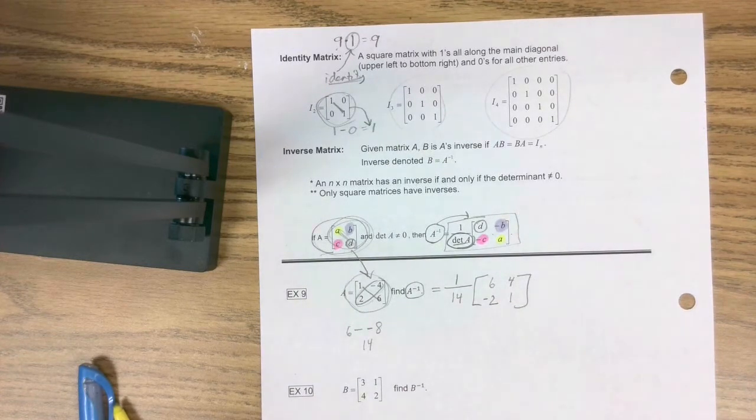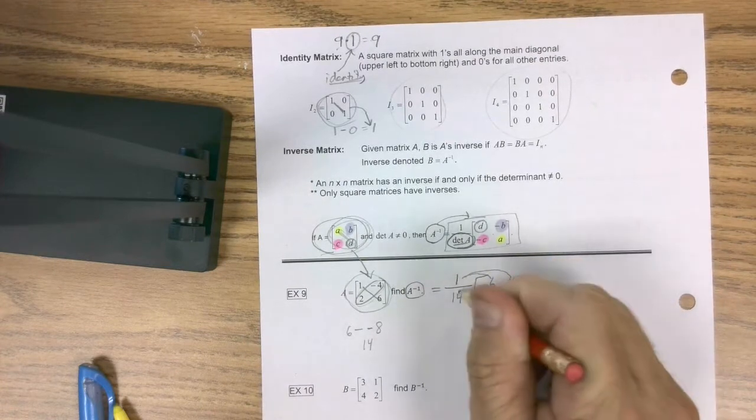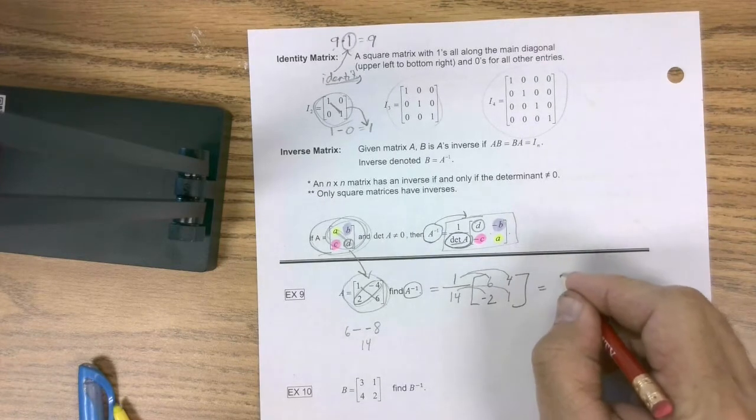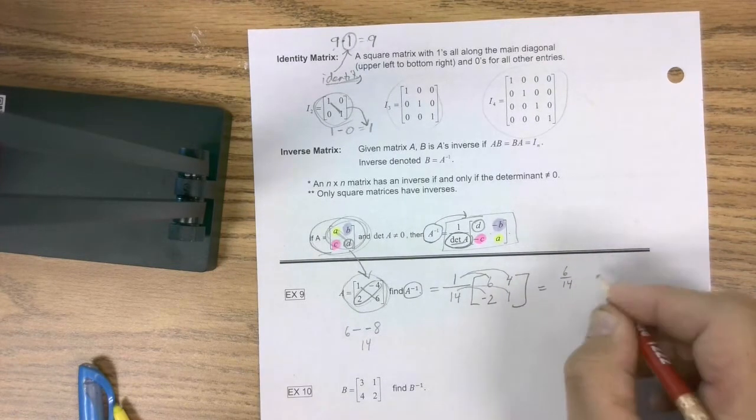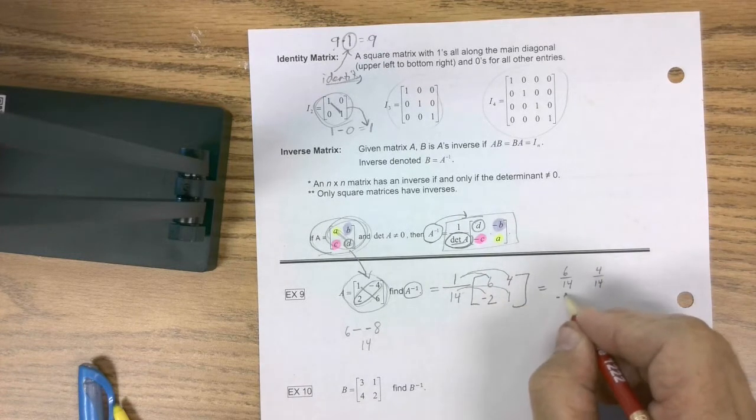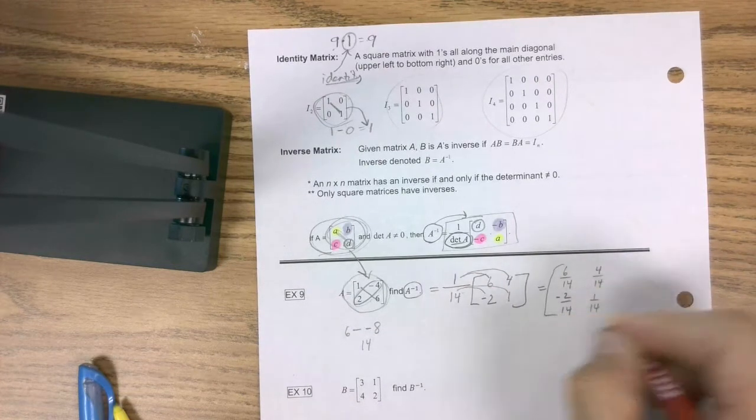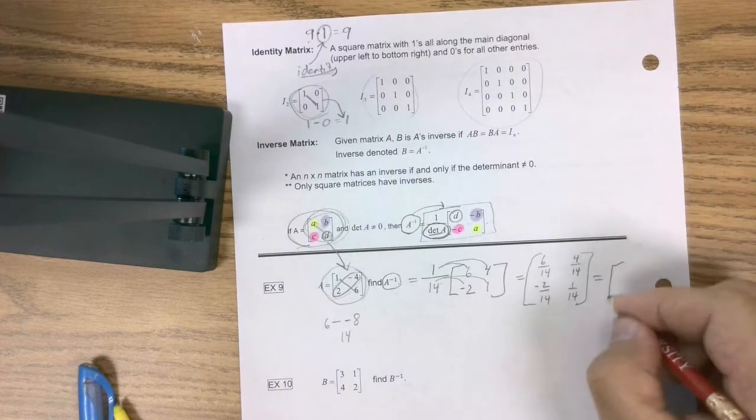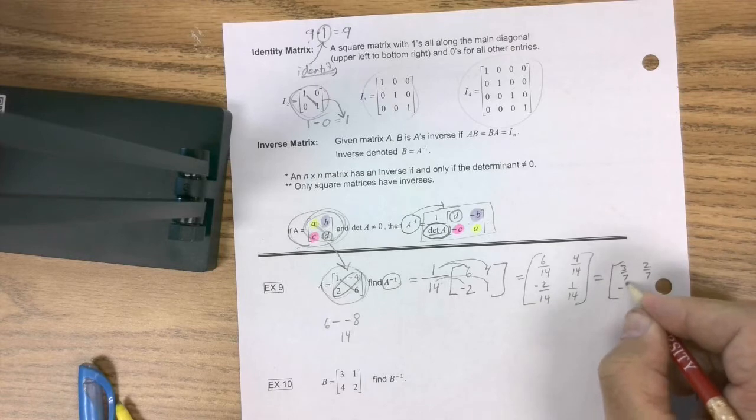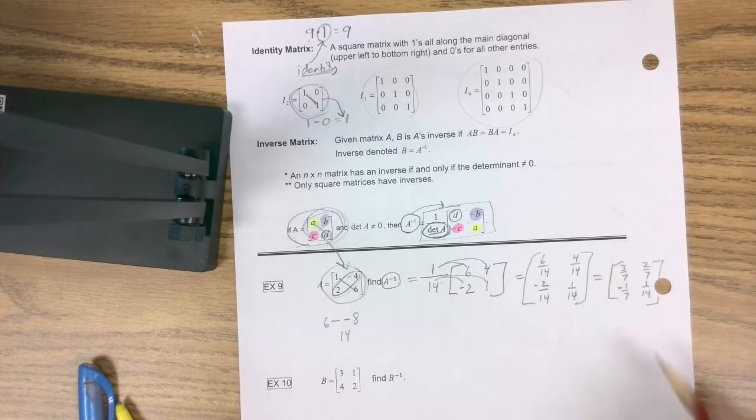Now you're technically done, but what they're going to do is they're going to distribute this through and distribute, distribute, distribute, just to take it one step further. So I would get 6 fourteenths, and I'd get 4 fourteenths, and then in the bottom I'd get negative 2 fourteenths, and then in the bottom right I'd get 1 fourteenth. I'm almost done because that reduces. That'd be 3 sevenths. This would be 2 sevenths. This would be negative 1 seventh, and this is 1 fourteenth because that doesn't reduce. And then you're done.